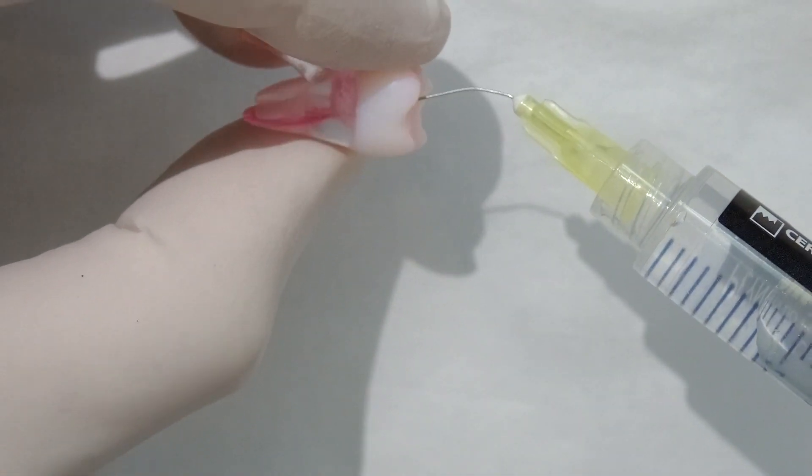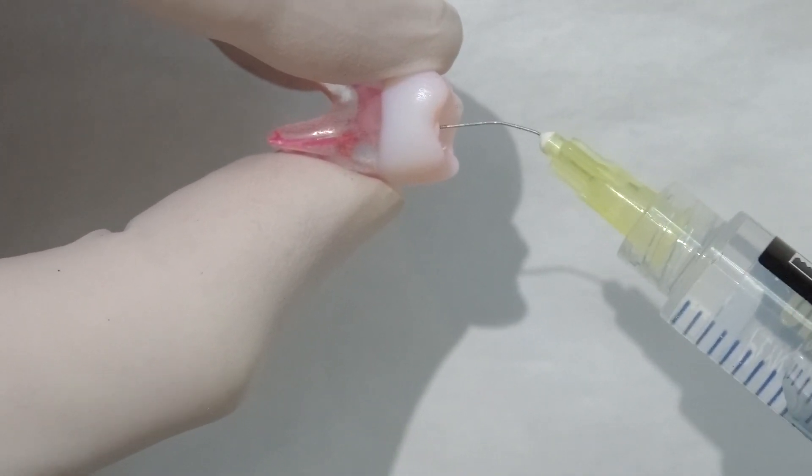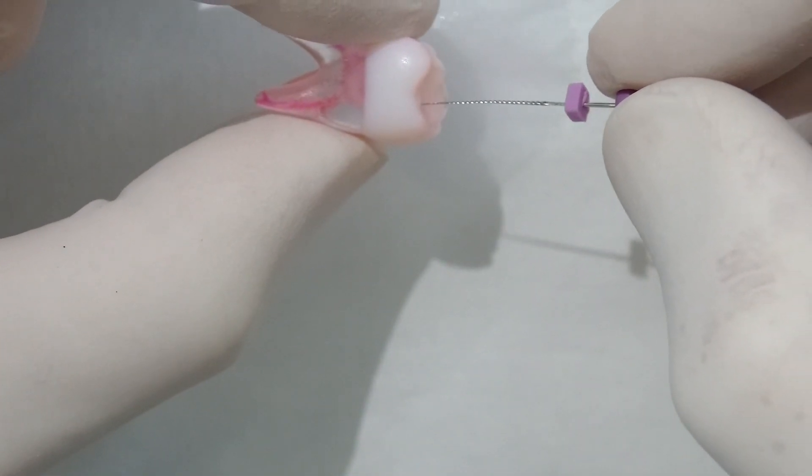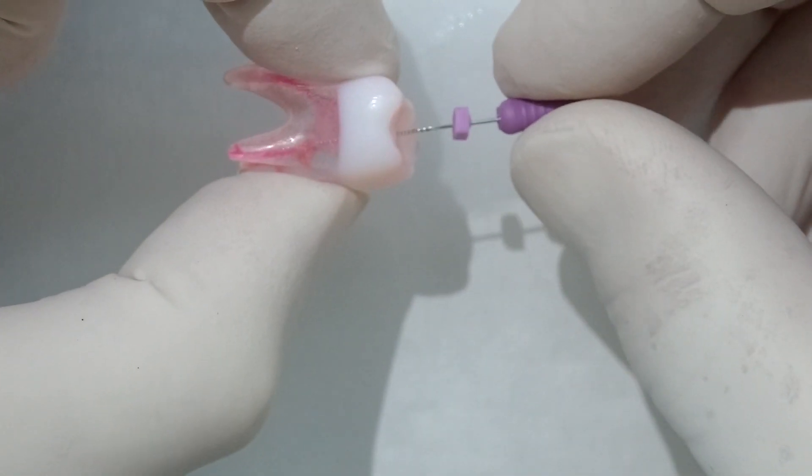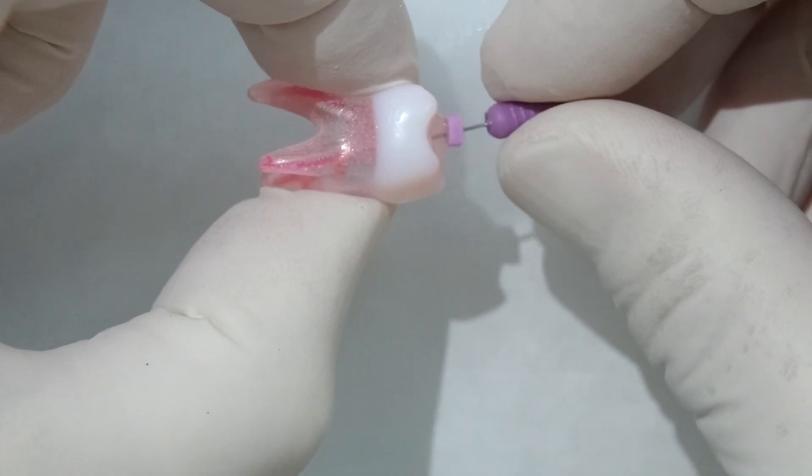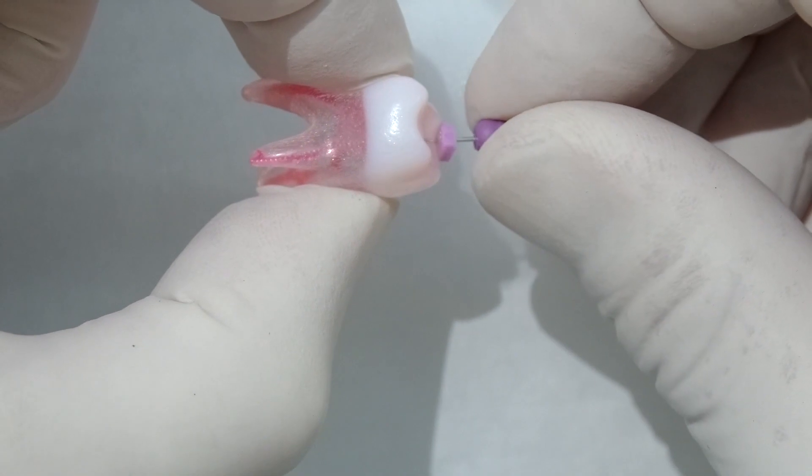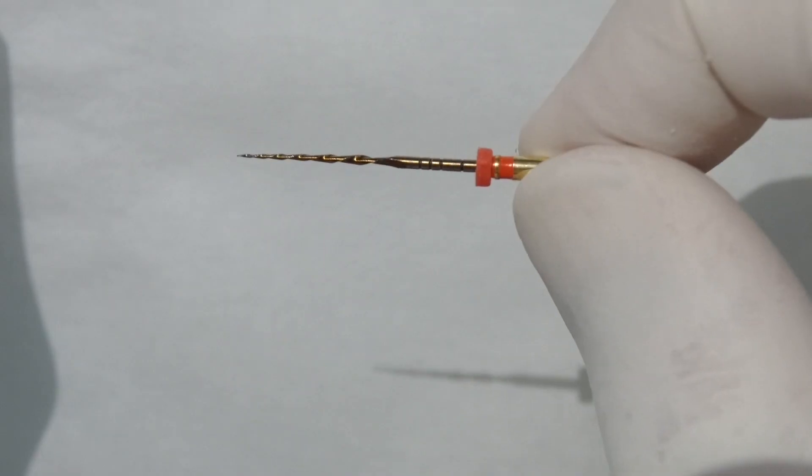This is just using some sodium hypochlorite just to irrigate, make sure we get rid of all the debris. Then we'll always make sure that whenever we do any irrigation, after we've irrigated, we're going to go back in with our patency file. That's that size 10 file, measured still to the zero point, so we know that's going all the way to the root canal terminus, so we're not getting any blockages at the end of the root canal, which is really important. We'll just sneak that just a little bit long, and we can see that everything is nicely clean, nicely free from blockages.